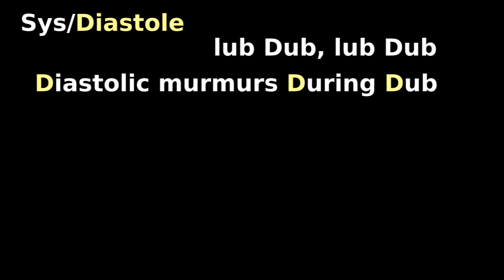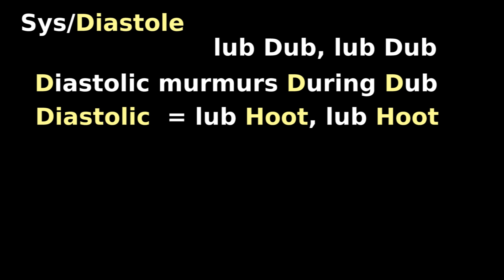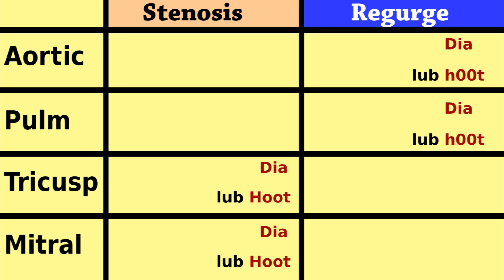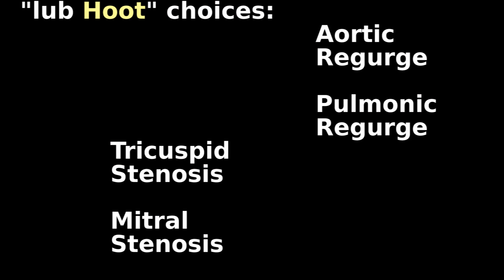Normal heartbeat is lub-dub, lub-dub. Diastolic murmurs happen during dub, so diastolic murmurs go lub-chut, lub-chut. If you hear lub-chut, these are your choices.